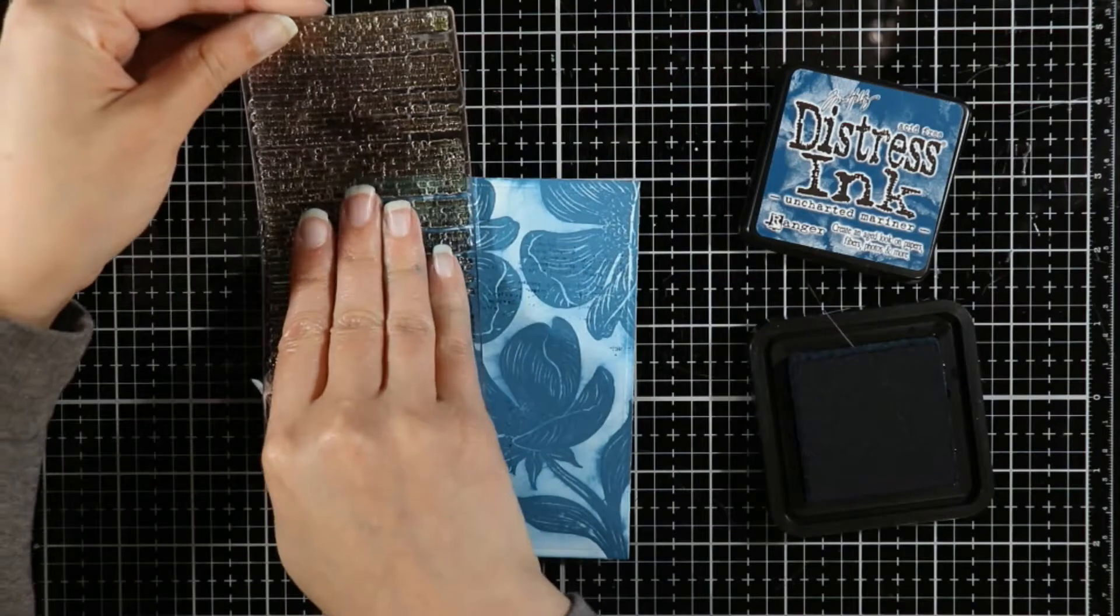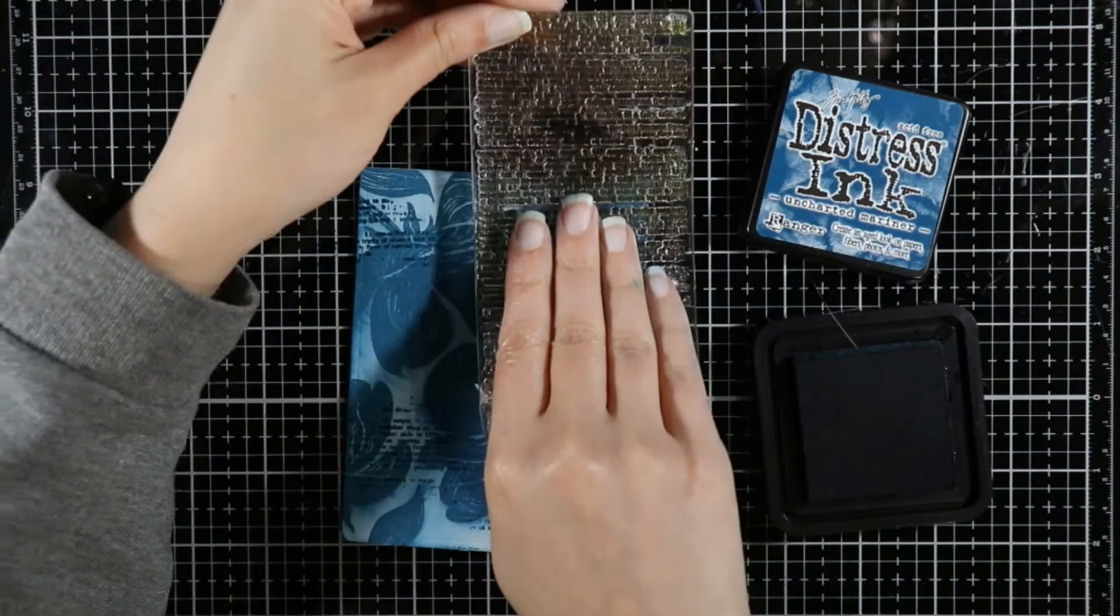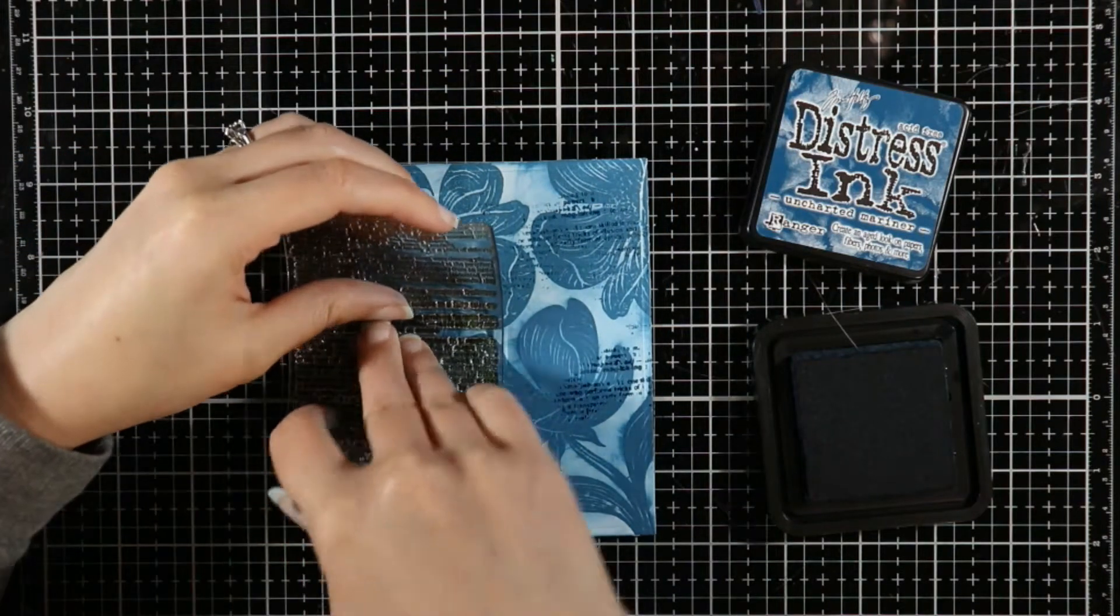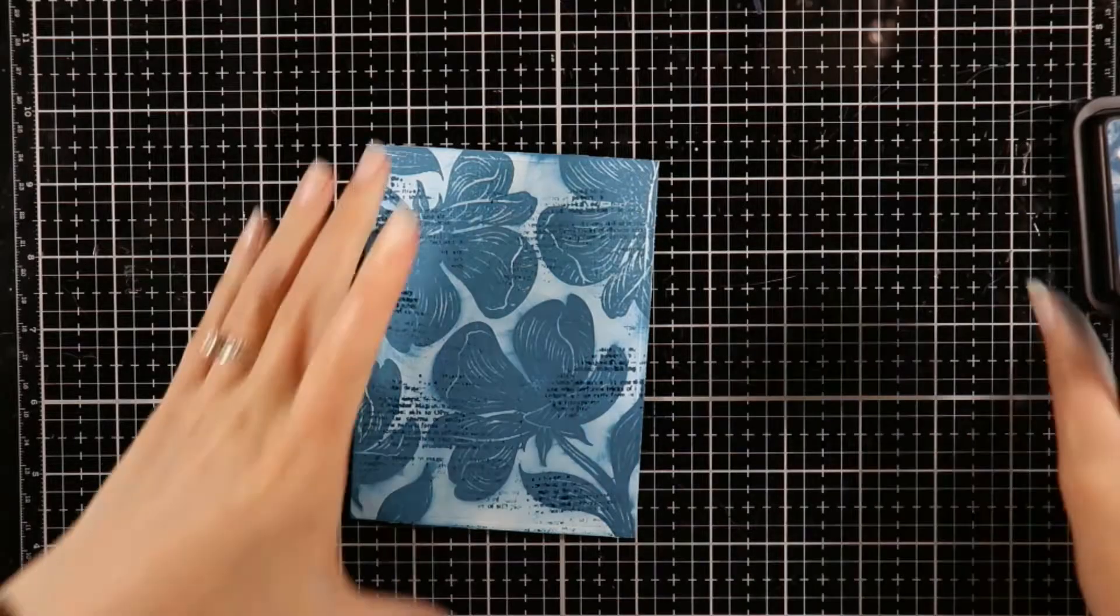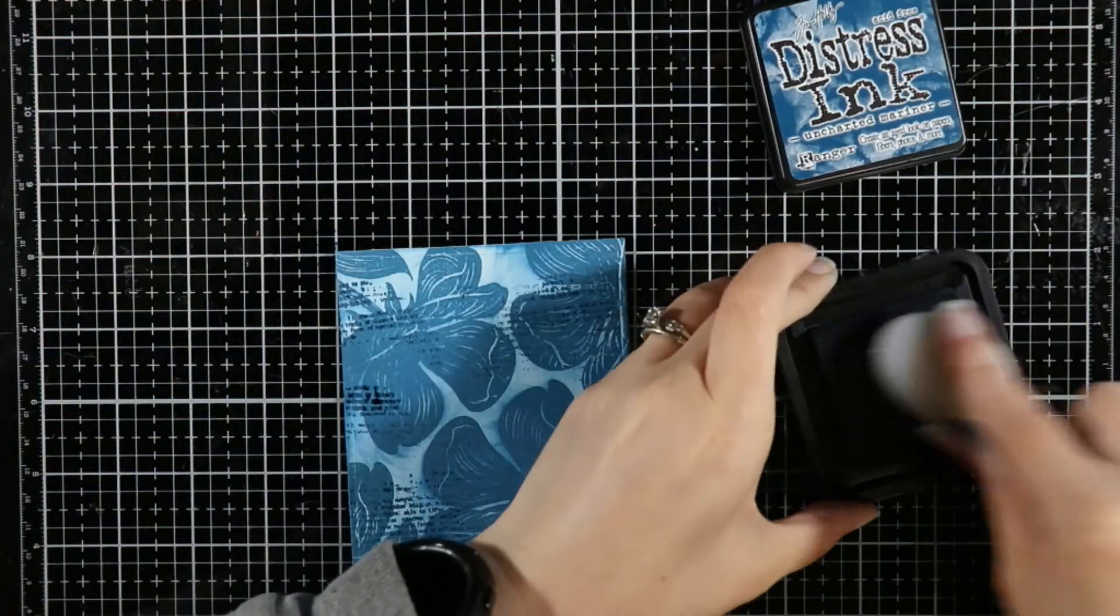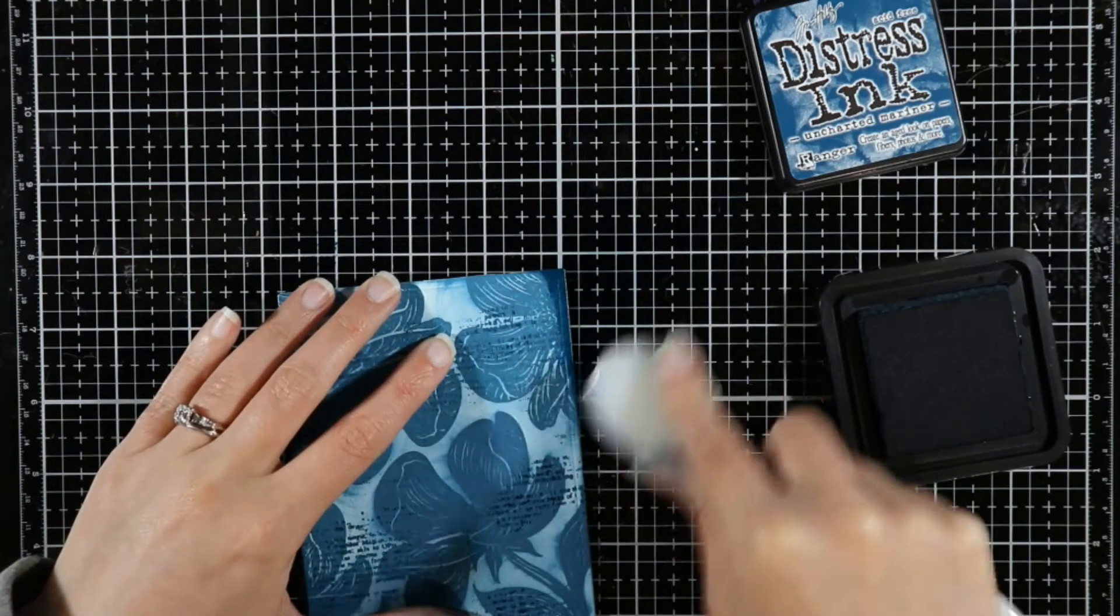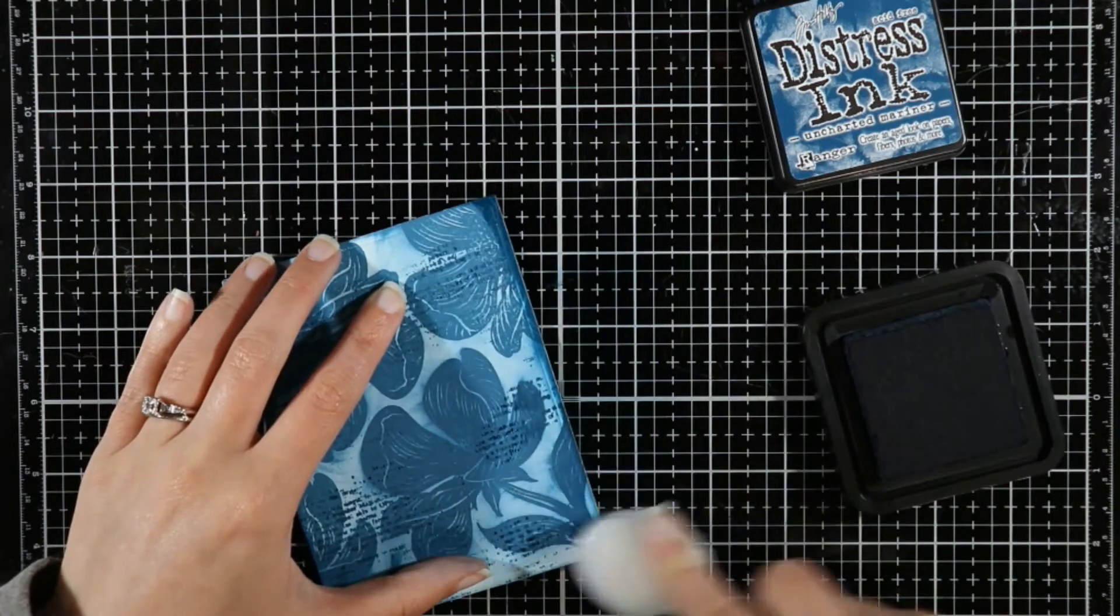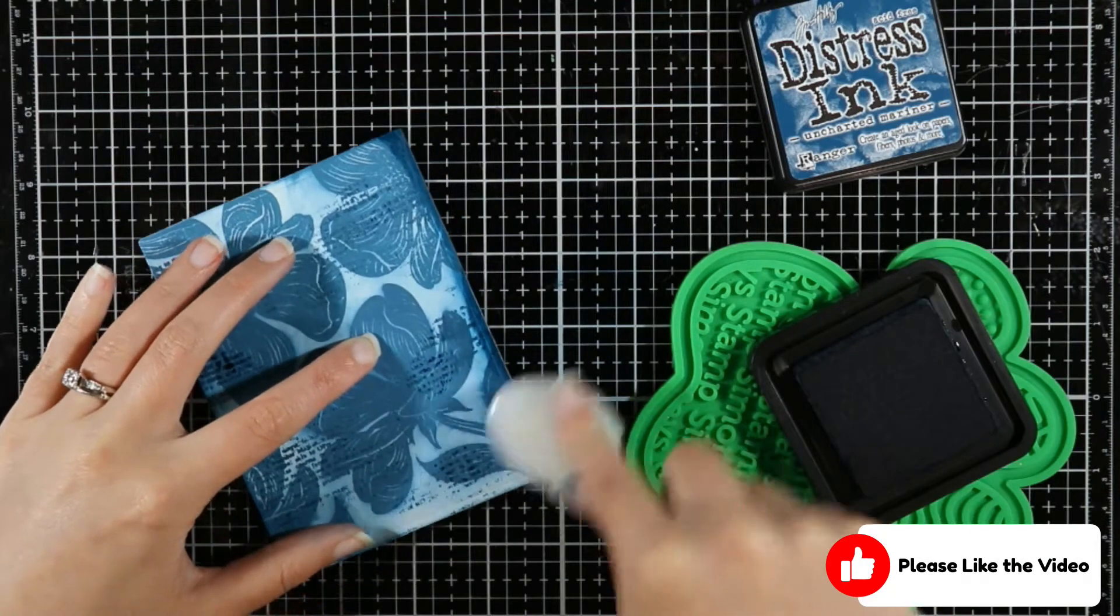Now I'm coming in here with the Fairy Dictionary stamp, and I'm using distress ink this time, not oxide, stamping over the top. The reason why I chose distress ink is because the ink is a darker color, where oxides dry muted. So the ink is going to show up brighter over the distress oxide.